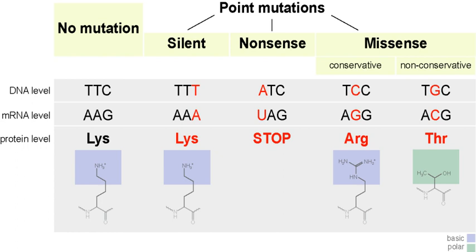In molecular biology, repeat-induced point mutation (RIP) is a process by which DNA accumulates G:C to A:T transition mutations. Genomic evidence indicates that RIP occurs or has occurred in a variety of fungi, while experimental evidence indicates that RIP is active in Neurospora crassa, Podospora anserina, Magnaporthe grisea, Leptosphaeria maculans, Gibberella zeae, and Nectria haematococca. In Neurospora crassa, sequences mutated by RIP are often methylated de novo. RIP occurs during the sexual stage in haploid nuclei after fertilization but prior to meiotic DNA replication. Repeat sequences of at least 400 base pairs in length are vulnerable to RIP, and repeats with as low as 80% nucleotide identity may also be subject to RIP. RIP results in repeated sequences undergoing multiple transition mutations.